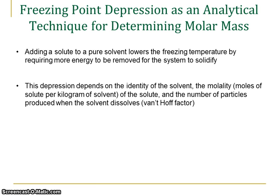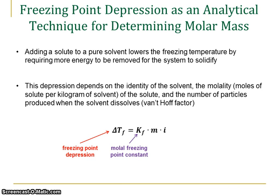The Van't Hoff factor tells me the apparent number of particles produced when the solvent and solute mix together. Mathematically, the freezing point depression is equal to the molal freezing point constant for the solvent — Kf — times the molality of the solute, times the Van't Hoff factor i. Freezing point depression is always a negative number, but since the name of it is depression, we can omit that negative sign if we understand the meaning of the word depression. We're always moving to a lower temperature, so we're interested in the absolute value. As long as we understand that, we can skip the negative sign.